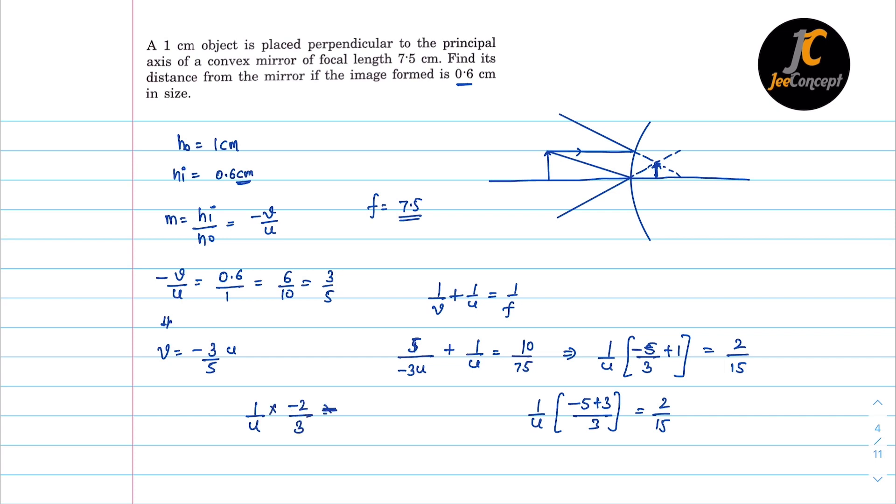So 2 cancels, 3 and 5, so u is minus 5 centimeter. Minus 5 signifies it is left hand side to object. Distance that is 5 centimeter.